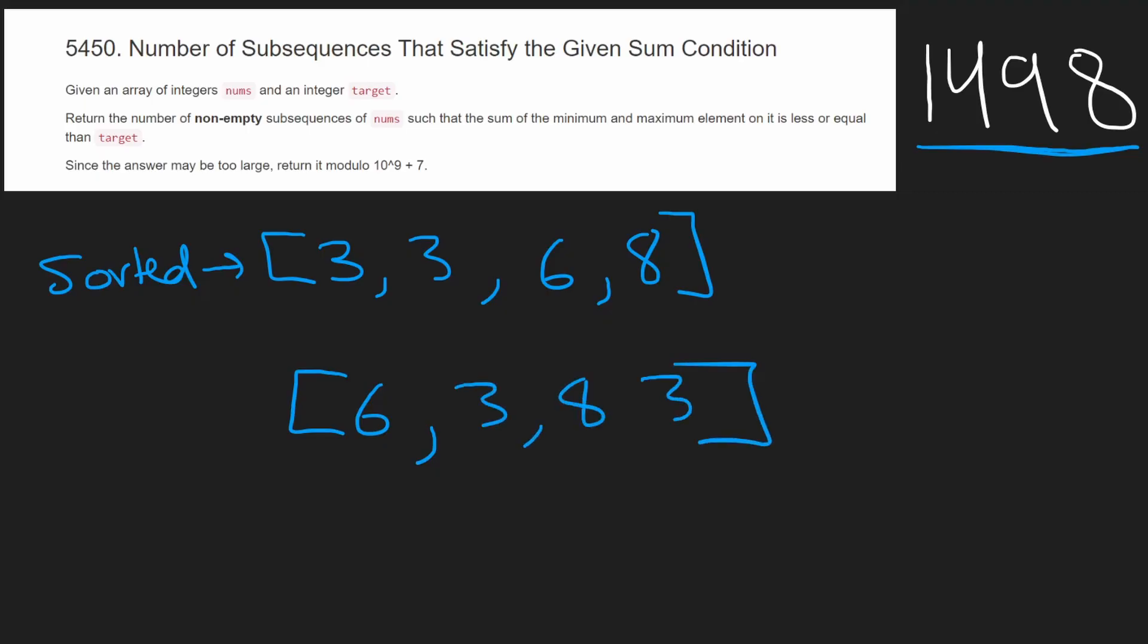But the thing about it is the subsequences of the unsorted array and the sorted array are always going to be the same. The order of the values, if we change them, it doesn't really change the total number of subsequences that satisfy the condition that we're looking for. That's why we're allowed to sort the input array.